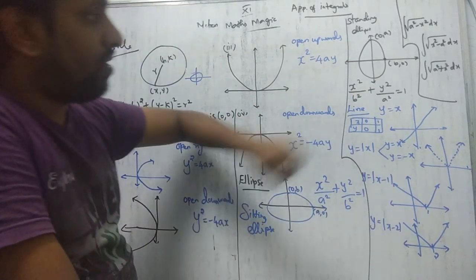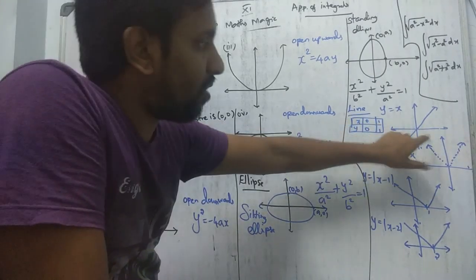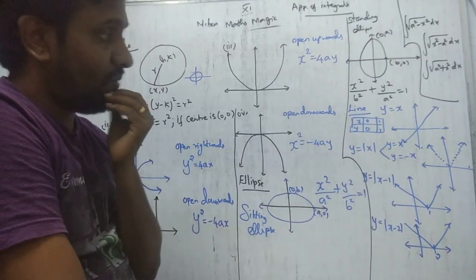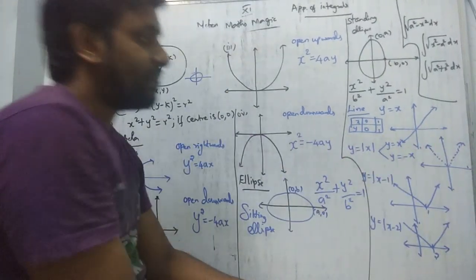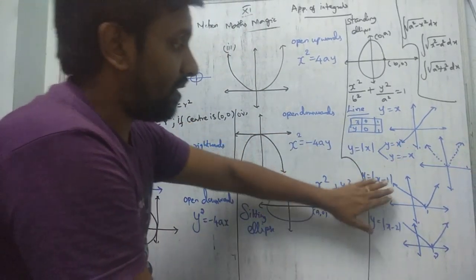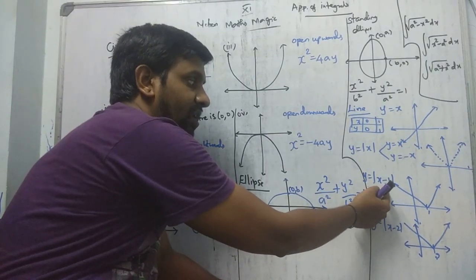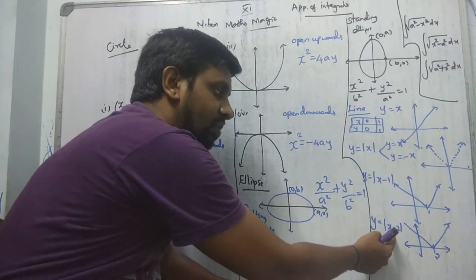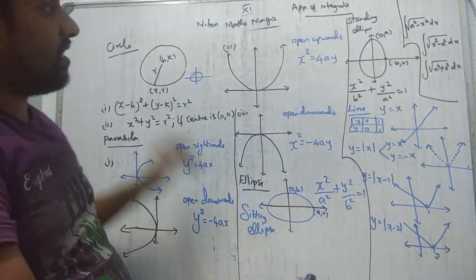And this is the line equation: y = x. To draw the line, make a table of values and plot the points. y = x is in the first quadrant; y = −x is in the second quadrant — this gives a V-shape. For example, y = |x − 1|: set x − 1 = 0, so x = 1 is where the V-shape starts. Similarly, x − 2 = 0 gives x = 2.